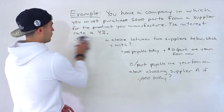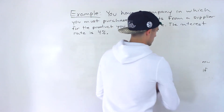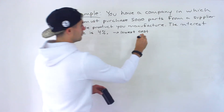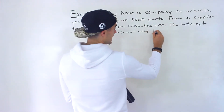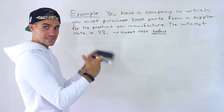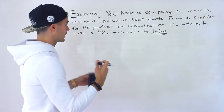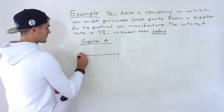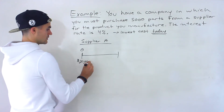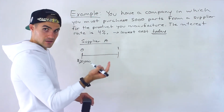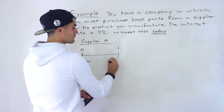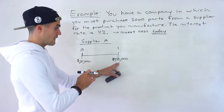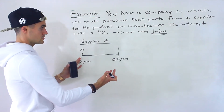For part A, you want to see which supplier is going to have the lowest costs today — meaning you want to compare the present value of the cost. With supplier A, if we draw a timeline, we have to make a $20,000 payment today, and then in one year we have to pay $10 per part times 5,000 parts, which is $50,000. So those are the two costs: $20,000 today and $50,000 in one year.